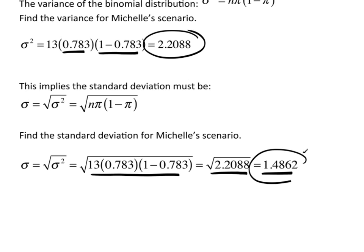This is the standard deviation, and you could do things with this very similar to what you could with Chebyshev's or the empirical rule with any sort of data. If I had reason to believe that this is symmetric, I would use the empirical rule; otherwise I'd use Chebyshev's rule.